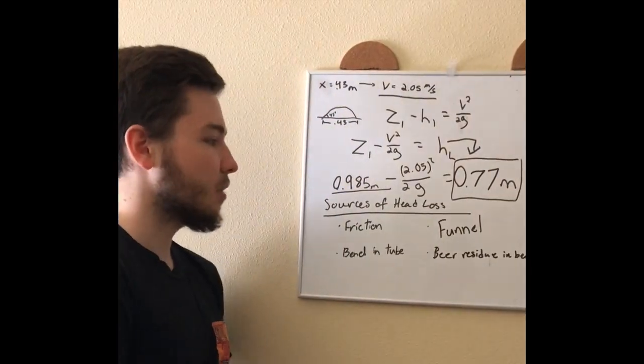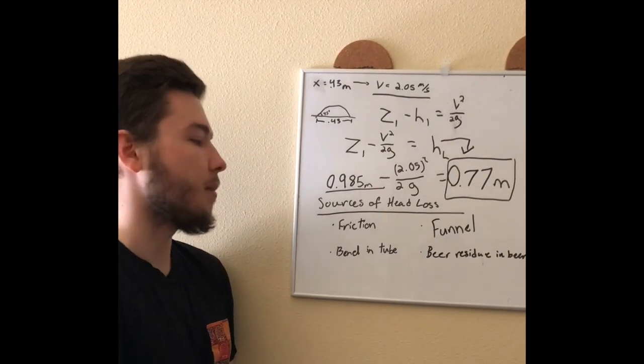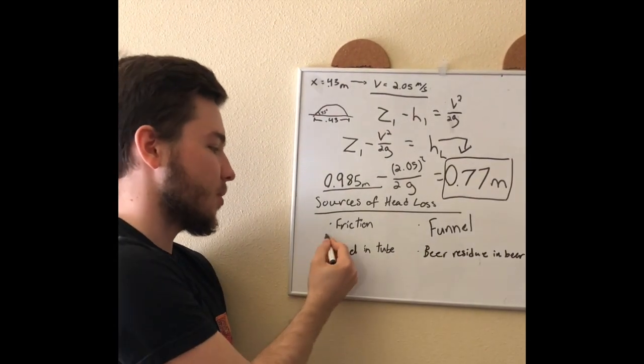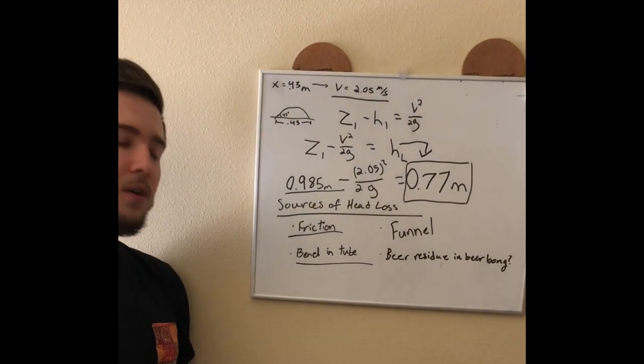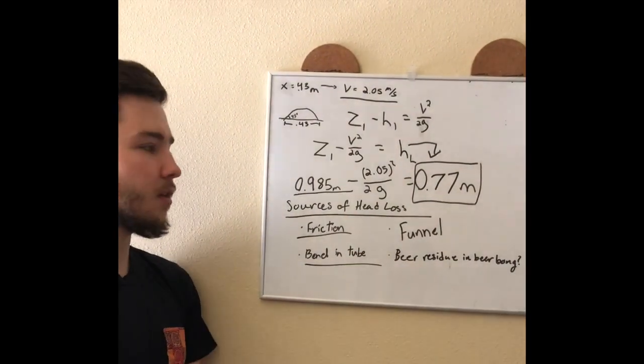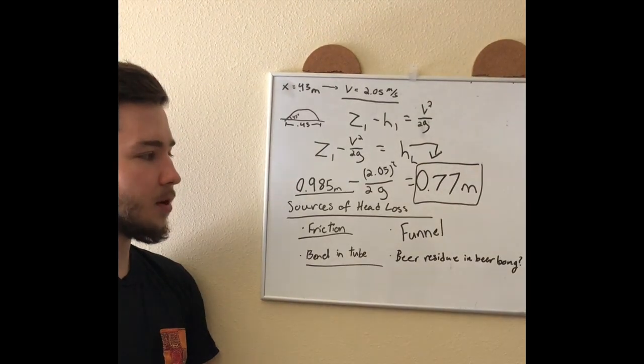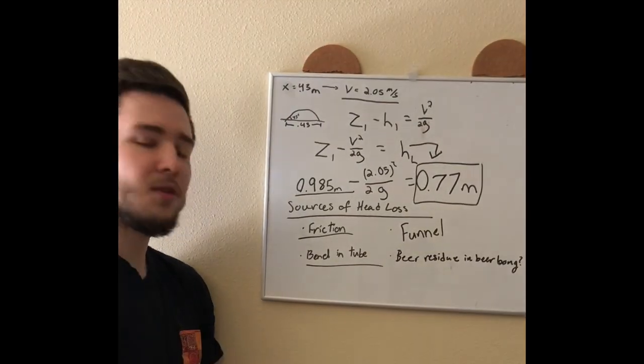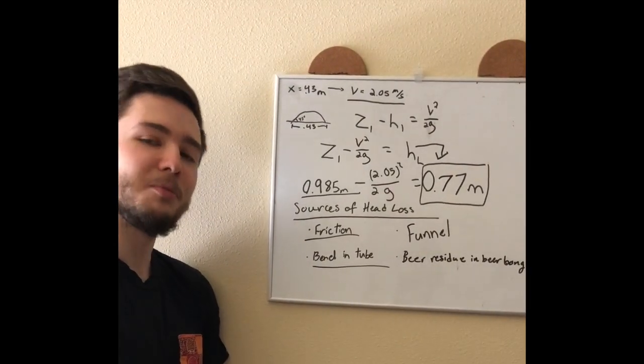From that we can theorize where the head loss came from. The main two sources are probably friction and the bend in the tube. Another couple sources we thought of were maybe the diameter change in the funnel as the water goes down the beer bong funnel, and maybe some beer residue from previous use.